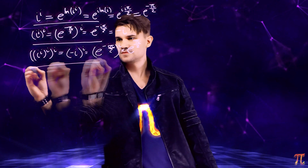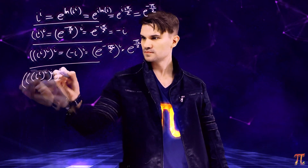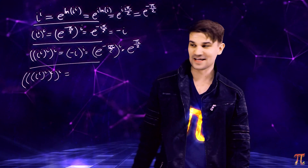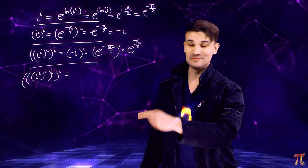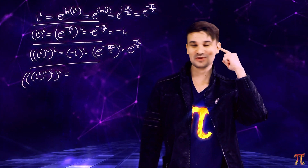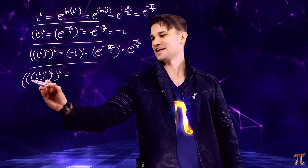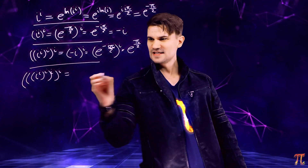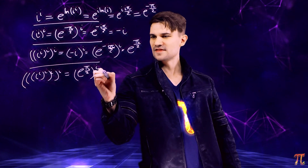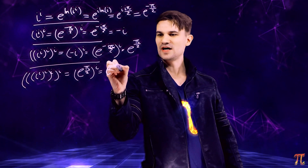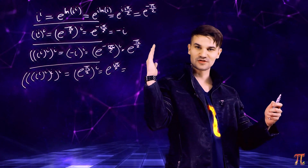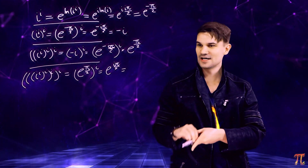What comes next? i to the i to the i to the i to the i to the i. All this stuff is e to the pi over 2, and we're raising that to the i. So we get e to the i pi over 2, which is the complex number that makes the angle pi over 2, which is, of course, i itself.